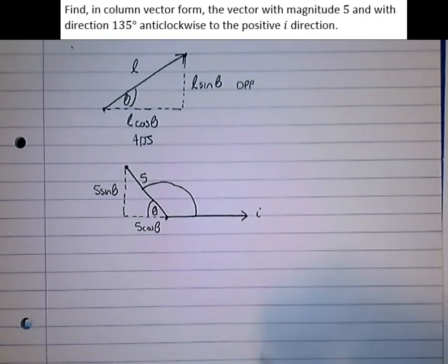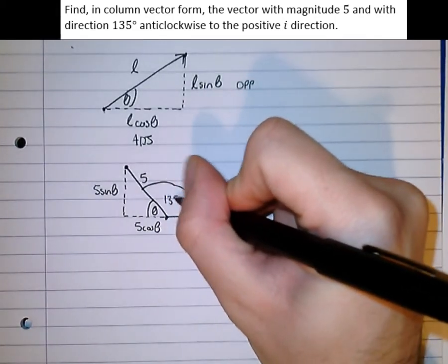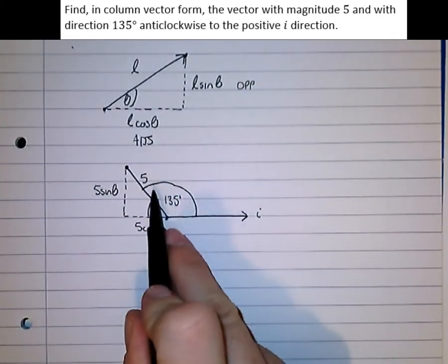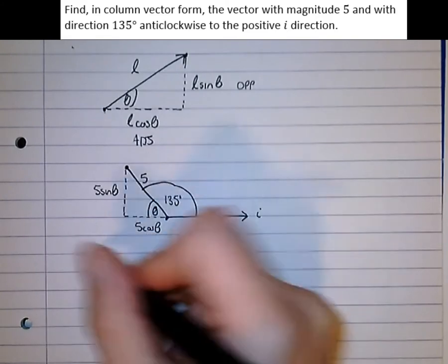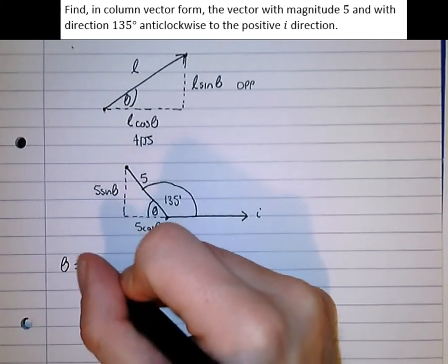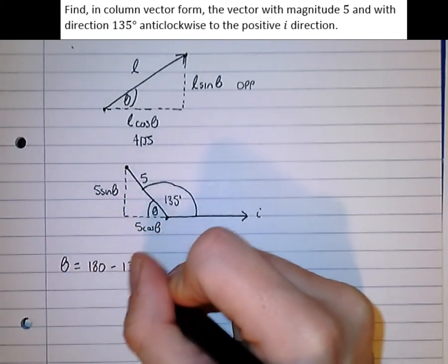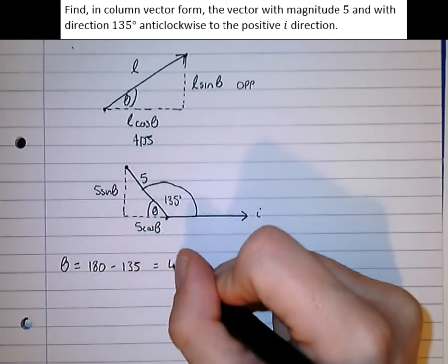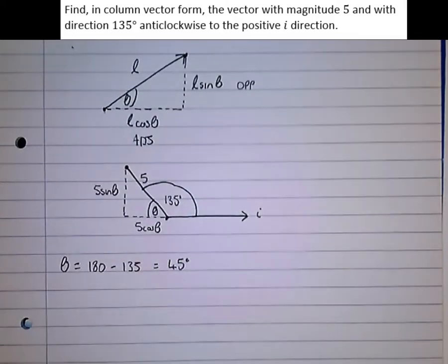So let's work out what theta is. Well, this is 135 degrees. So because angles on a straight line, this is 180 take away 135. So theta equals 180 take away 135, which is 45 degrees.